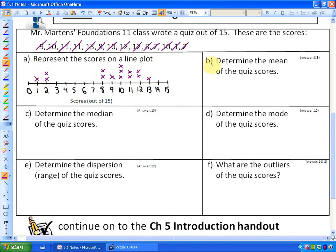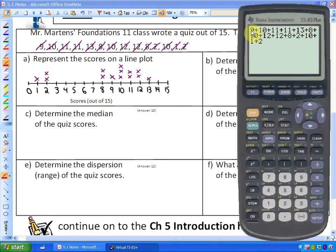Part B says determine the mean of the quiz scores. We're going to add up all the values. I've already taken these values, and as you can see on my calculator, I've entered them in—9, 10, 11, 11, these are all the scores, including the multiples. I'm going to add them up. Hit equals. There's the sum.